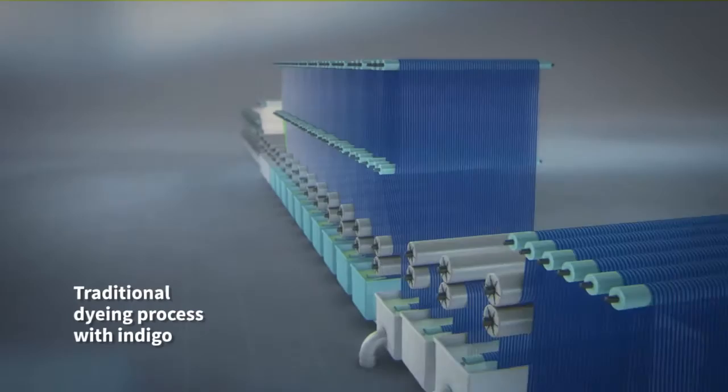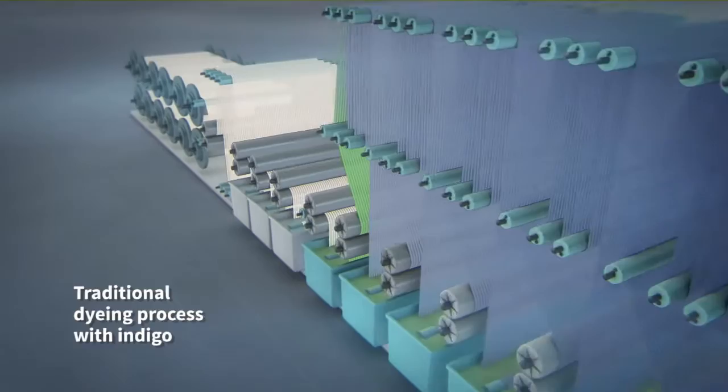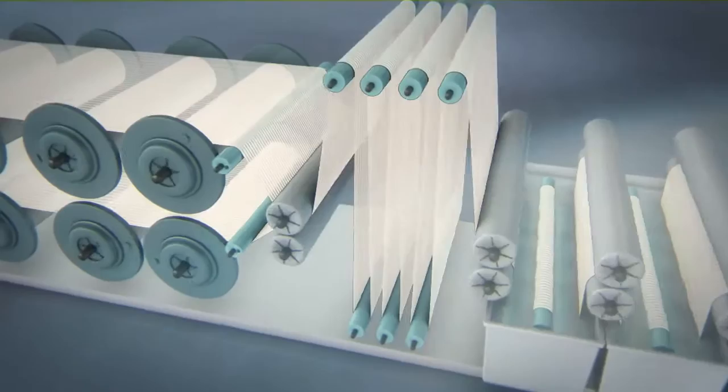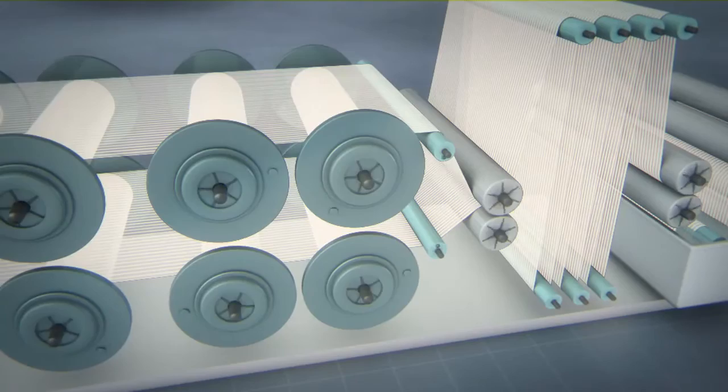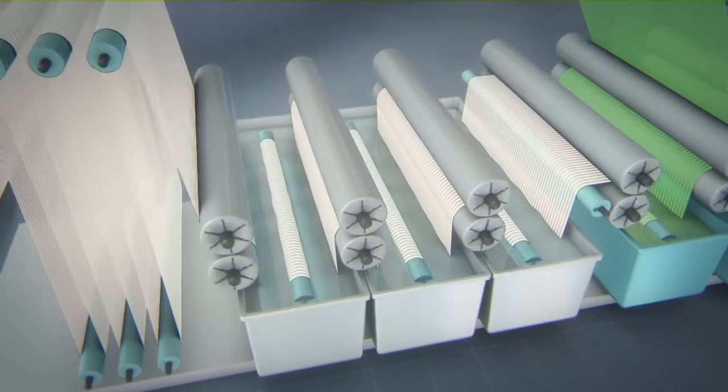Traditional dyeing with indigo requires the use of long production lines, some stretching to more than half a mile in length. These machines consume enormous amounts of water and energy. Moreover, when the color is changed, most batches create large amounts of cotton waste because of the need to dispose of all the fibers still inside the machine.